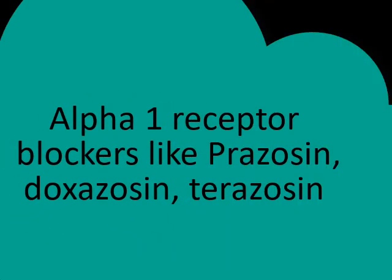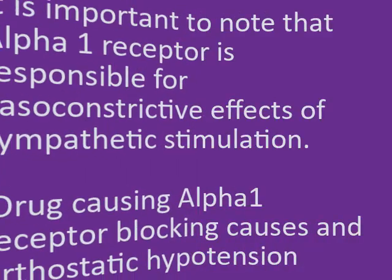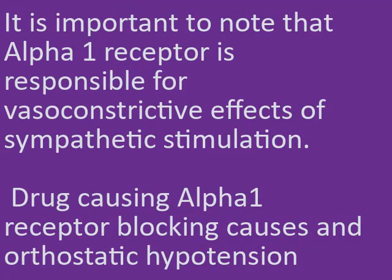Alpha-1 receptor blockers like prazosin, doxazosin, and terazosin, used in hypertension, cause marked orthostatic hypotension due to blockage of the alpha-1 receptor. The alpha-1 receptor is responsible for the vasoconstrictive effects of epinephrine, which is secreted in response to baroreceptor feedback of hypotension. Drugs causing alpha-1 receptor blockade cause orthostatic hypotension due to blockage of alpha-1-mediated vasoconstriction.